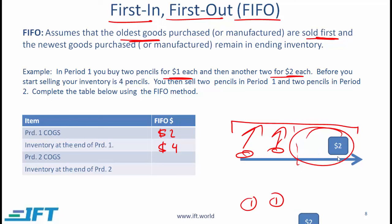Then in period 2, you sell these 2 items. So the COGS is 2 times $2, which is $4, and the inventory at the end of period 2 is $0. An important clarification: while it seems like we are selling the specific item bought for $1 and then the one bought for $2, in reality we are not tagging each item. This is simply a method of allocating cost — in your costing system you track that the first 2 items sold have a cost of $1 and the next 2 have a cost of $2.